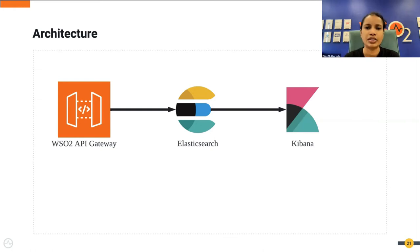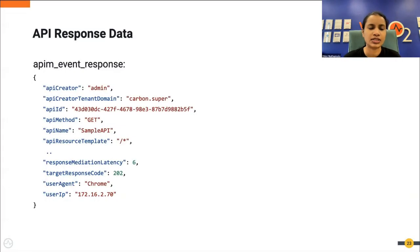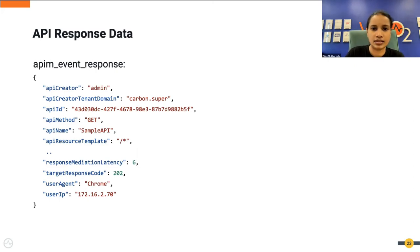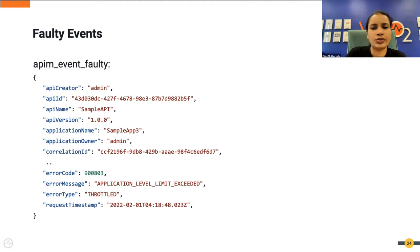The WSO2 API Manager publishes two types of events to Elasticsearch: response events and fault events - API event response and API event fault. A response event contains data regarding each successful API invocation by the gateway, for example the API creator, tenant domain, API method, and all such information. A fault event contains data regarding each fault API invocation by the gateway. We will now show you how to use this published data to create your own dashboards and widgets.